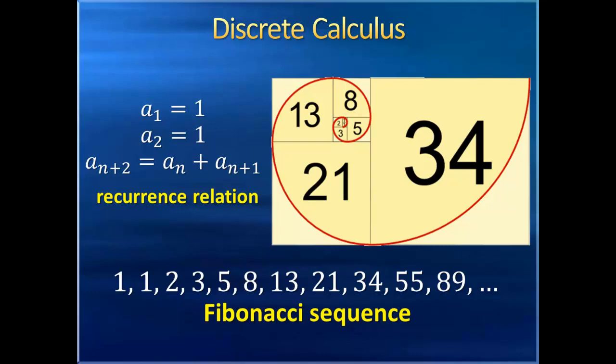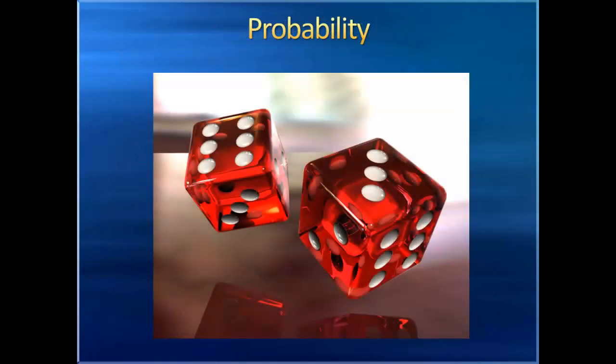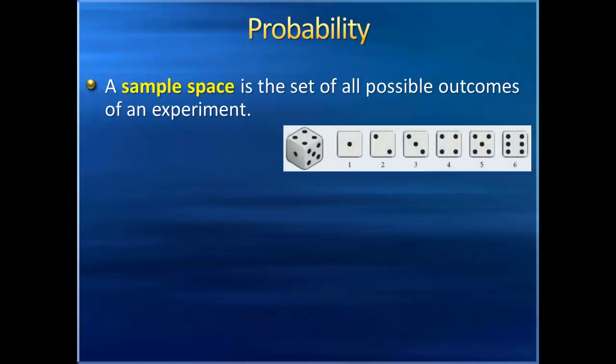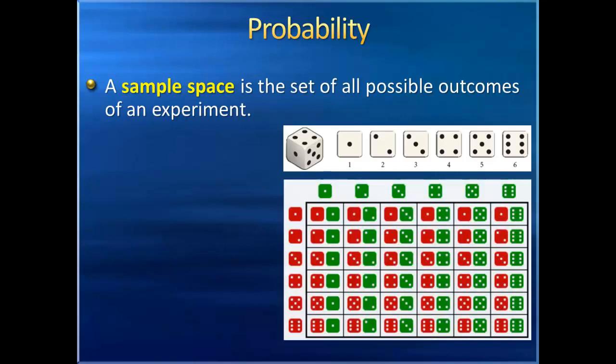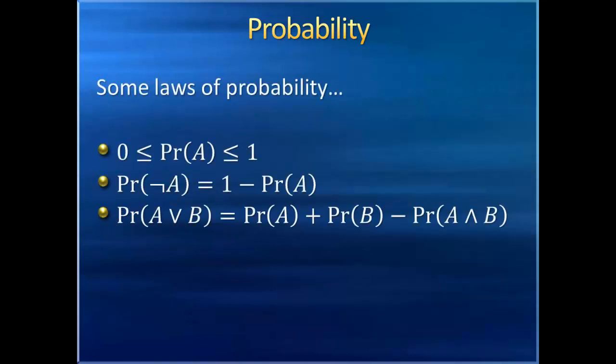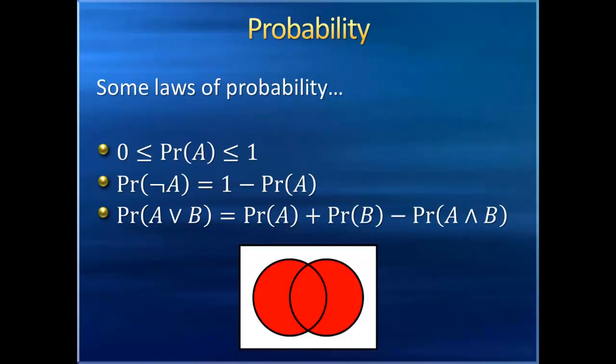A familiar topic that's often expanded upon in discrete math is probability. The study of probability in discrete math begins with the idea of a sample space, which is the set of all possible outcomes of an experiment. For instance, the sample space of a single roll of a die would be the set one, two, three, four, five, six, whereas the sample space for two rolls would be that set's Cartesian product with itself, all possible ordered pairs of integers from one to six. Then, if each outcome is equally likely, the probability of an outcome that satisfies some particular property is the fraction of elements of the sample space that satisfy that property. The probabilities of different events follow various algebraic laws that are rooted in the concepts of set theory that we've already studied.